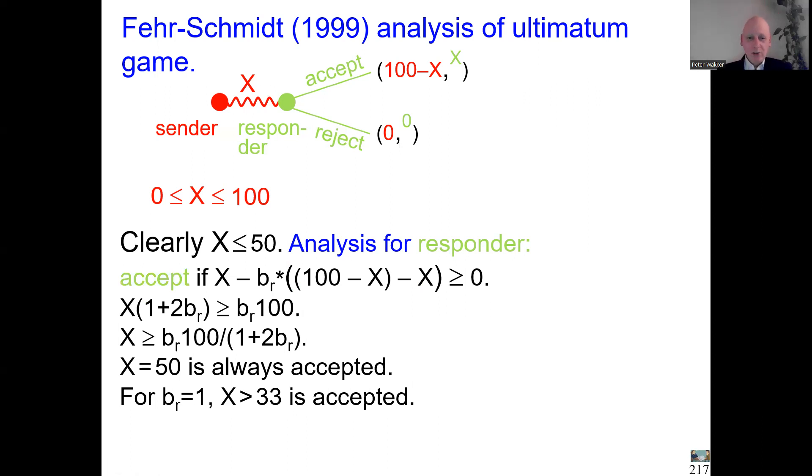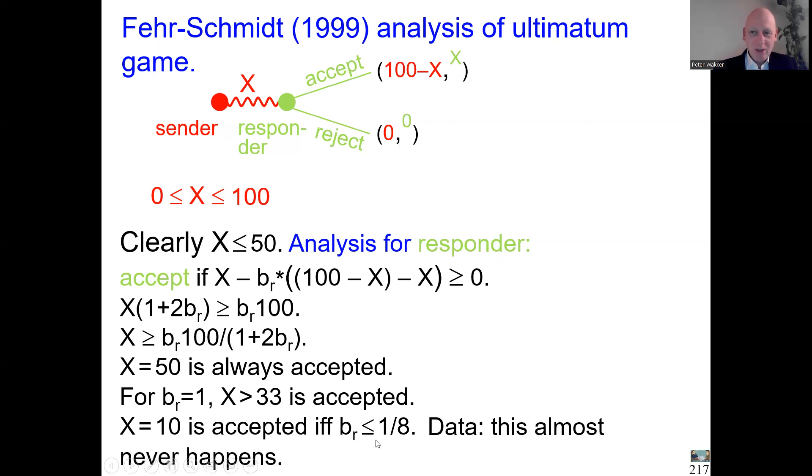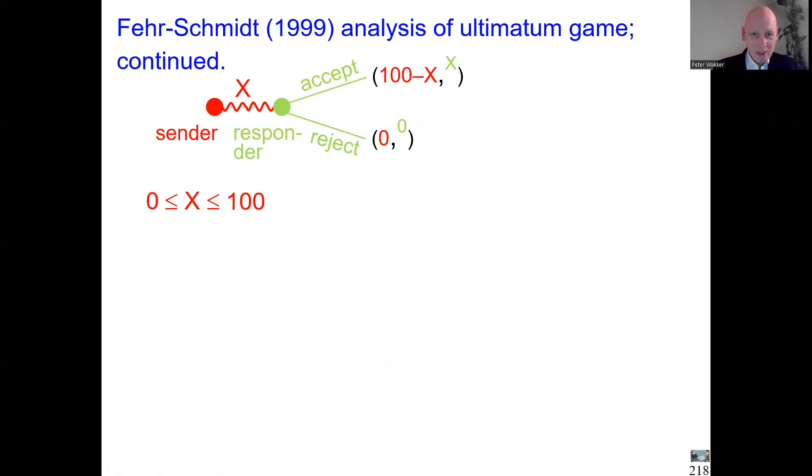I already told you that offers of 10 are almost never accepted empirically. Let's see when does that happen. It turns out 10 is accepted if and only if b_r is 1 over 8 or smaller. Let us look at this formula. If b_r is 1 over 8, then this is going to be 10 in total. So then we have acceptance if and only if X is 10 or more. I already told you that this doesn't happen empirically. So that means b_r 1 over 8 is too small. Empirically, the responders are more critical than that. Their aversion of being behind is stronger than 1 over 8, and more than 10 will have to be sent.